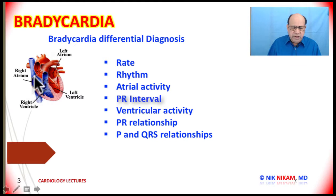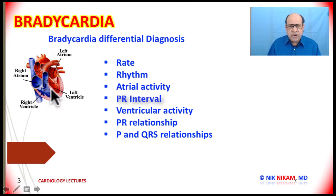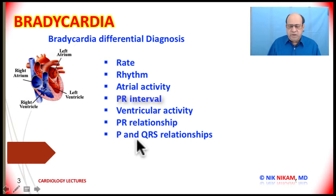Once we look at the atrial electrical activity, we look at AV conduction — the PR interval — and see if it is constant, short, long, or if there is AV dissociation. That is followed by ventricular activity: the QRS complex — is it narrow or wide? Next, we look at the PR relationship: is it constant or varying? That tells us whether we are dealing with any kind of heart block. Finally, we look at the relationship between P waves and QRS complexes.